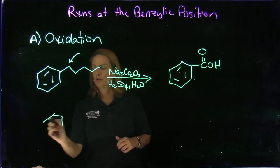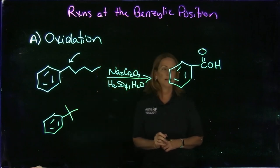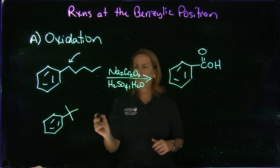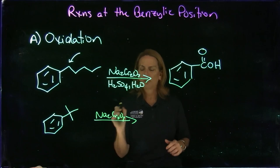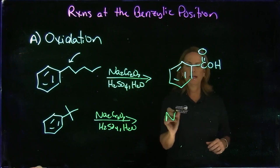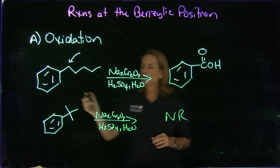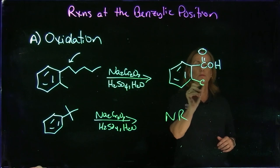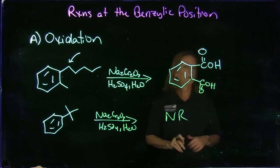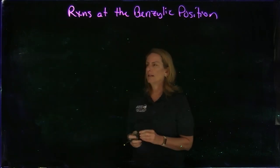You do need to have a proton at the benzylic carbon. Something like a structure that has three carbons attached with no hydrogen on that benzylic carbon — if we tried to do this reaction with sodium dichromate, you'll notice NR, no reaction; that one will not work. Also, if we had two methyl groups, both of them would get oxidized, assuming we added excess oxidizing agent.